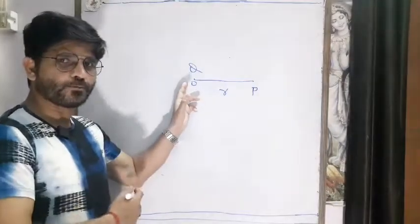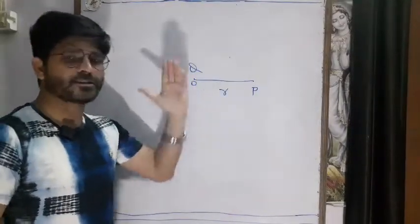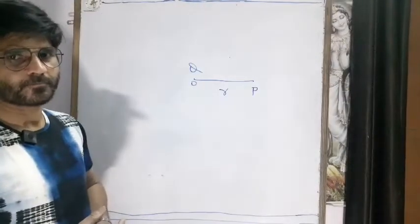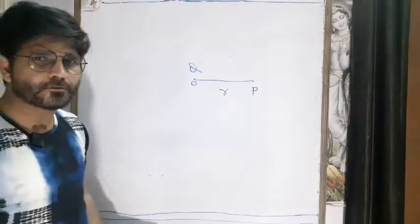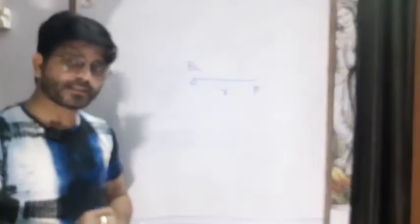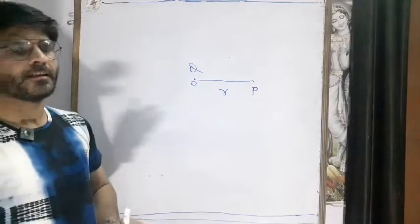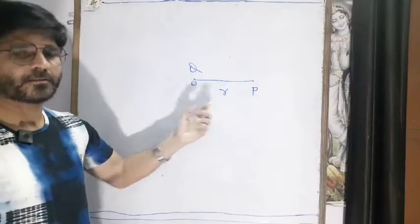We have a given point charge Q, and we are going to calculate the electric field at point P — what will be the value of the electric field at point P. For this, we already know that the electric field intensity depends upon the force acting on a charge placed at a point. We need another charge because electrostatic force can exist between two charges, not a single charge. So there must be another charge — that is, a test charge.